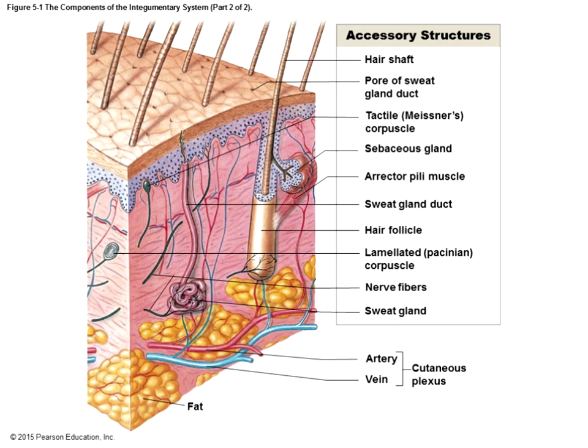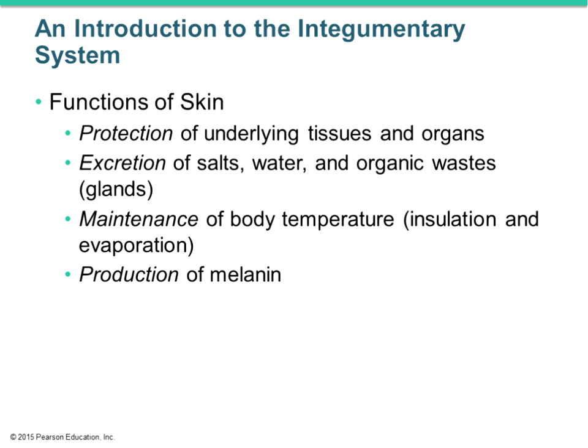What does the skin do for the body? Protection is the primary thing — it's your outer surface and protects all underlying tissues and organs. That's why if you have an injury to your skin it's very important to seal it, not only to prevent bleeding but also to prevent infection.